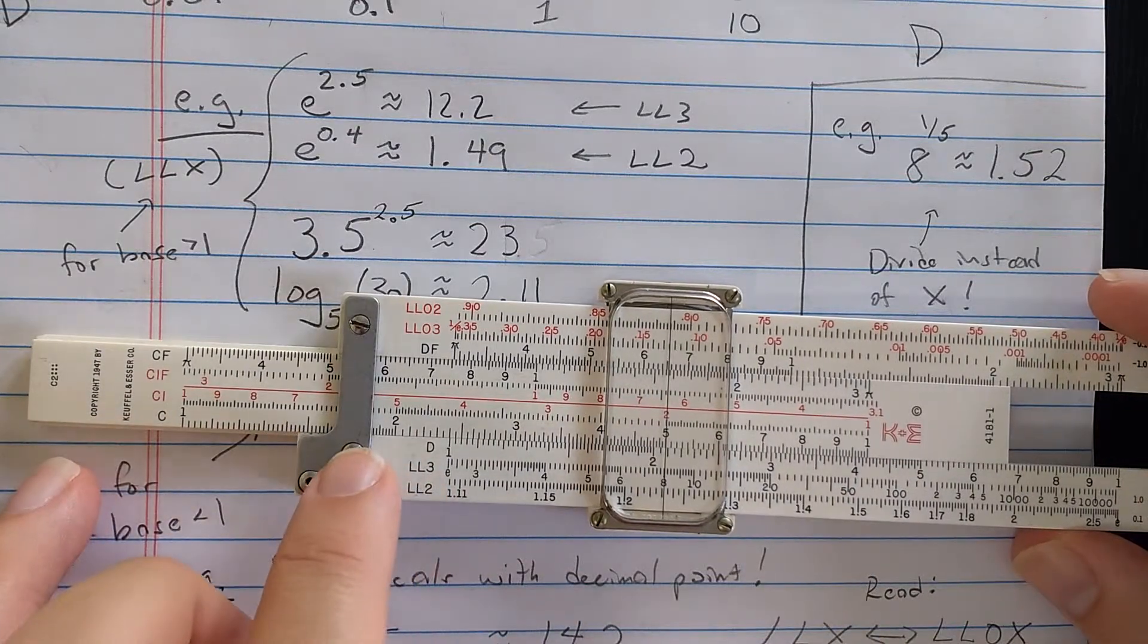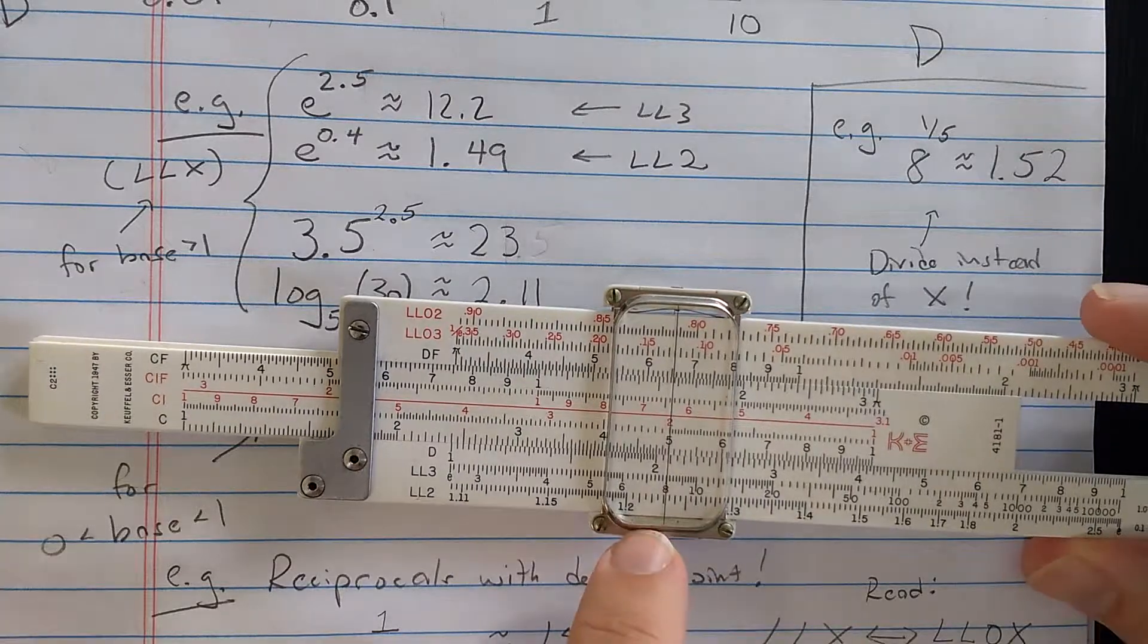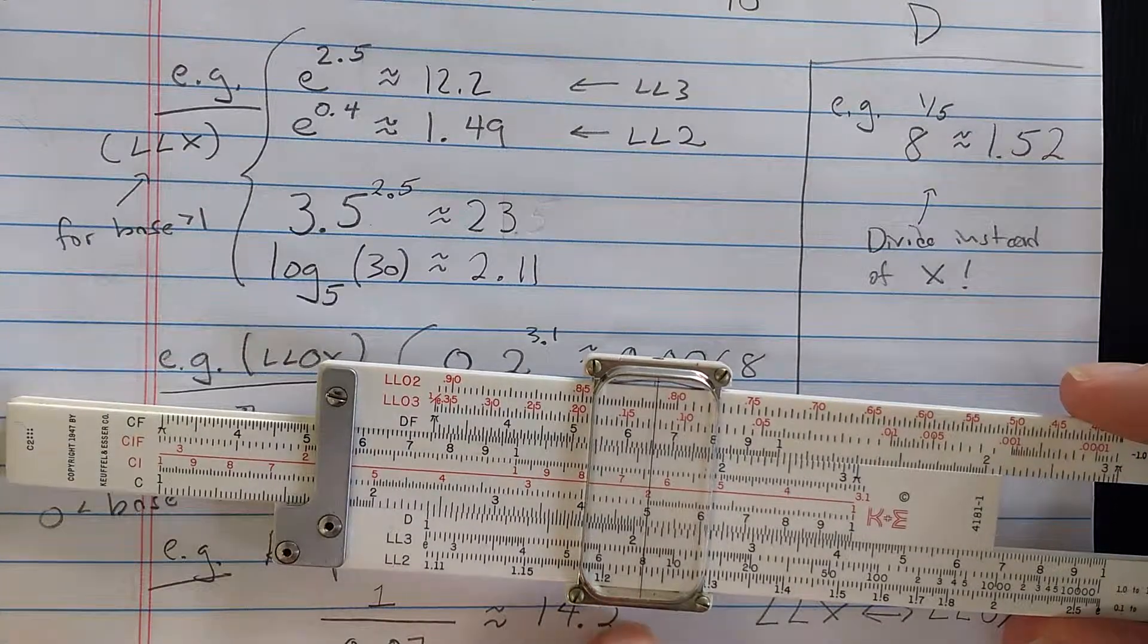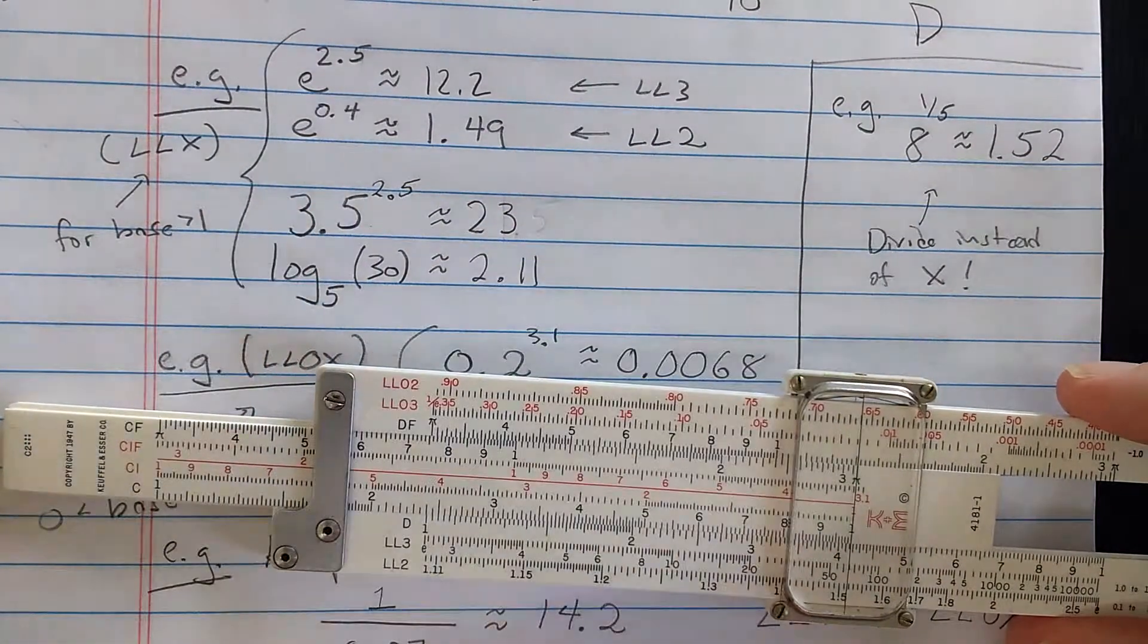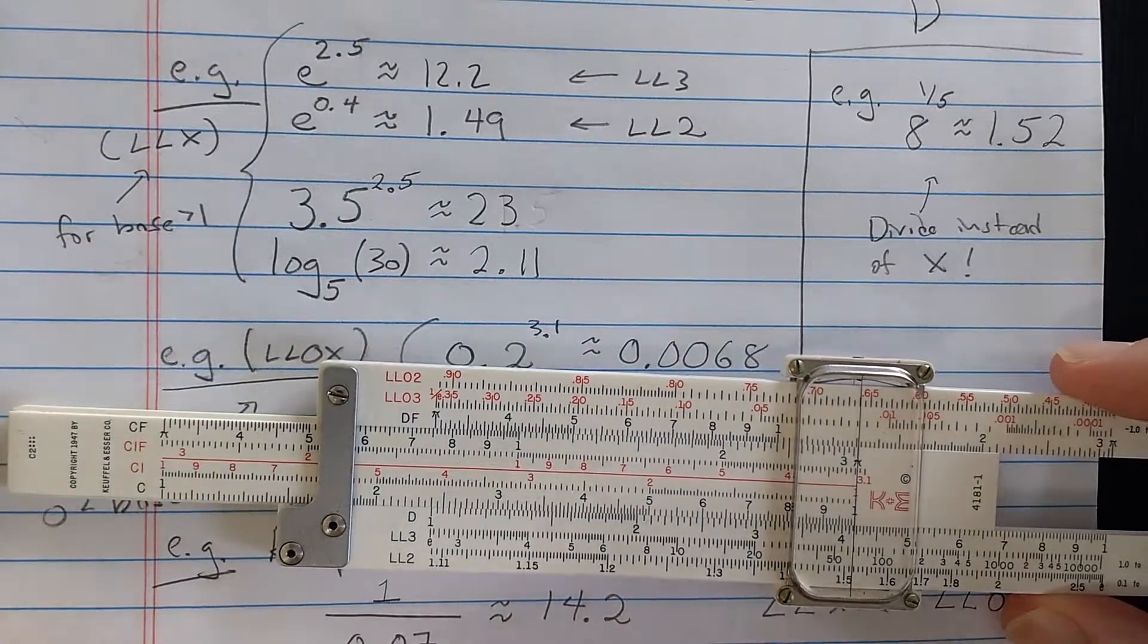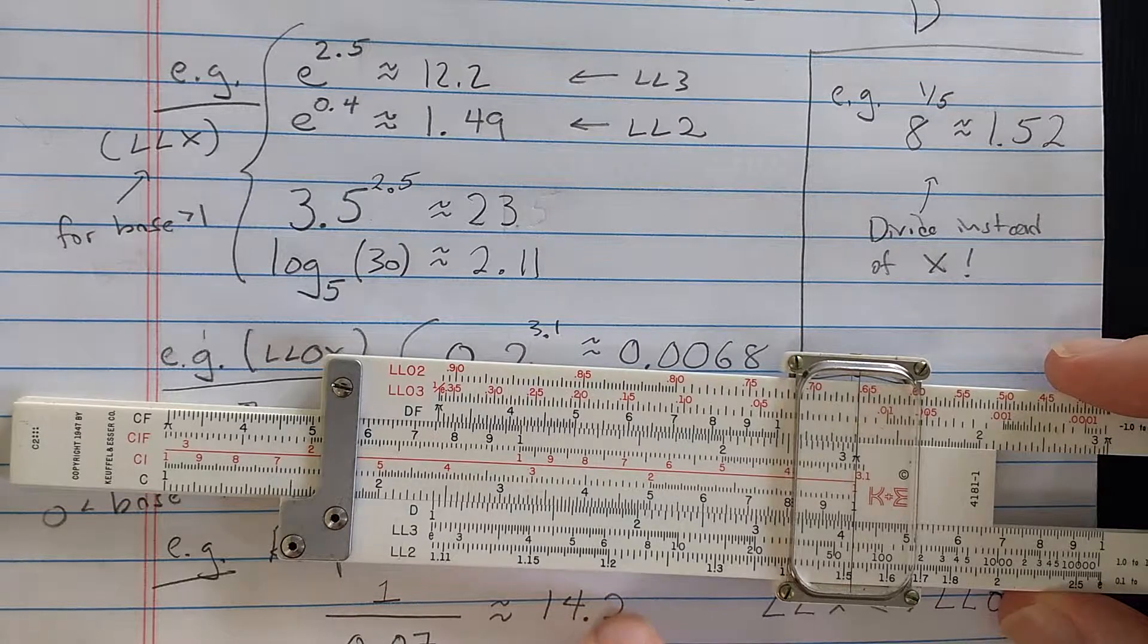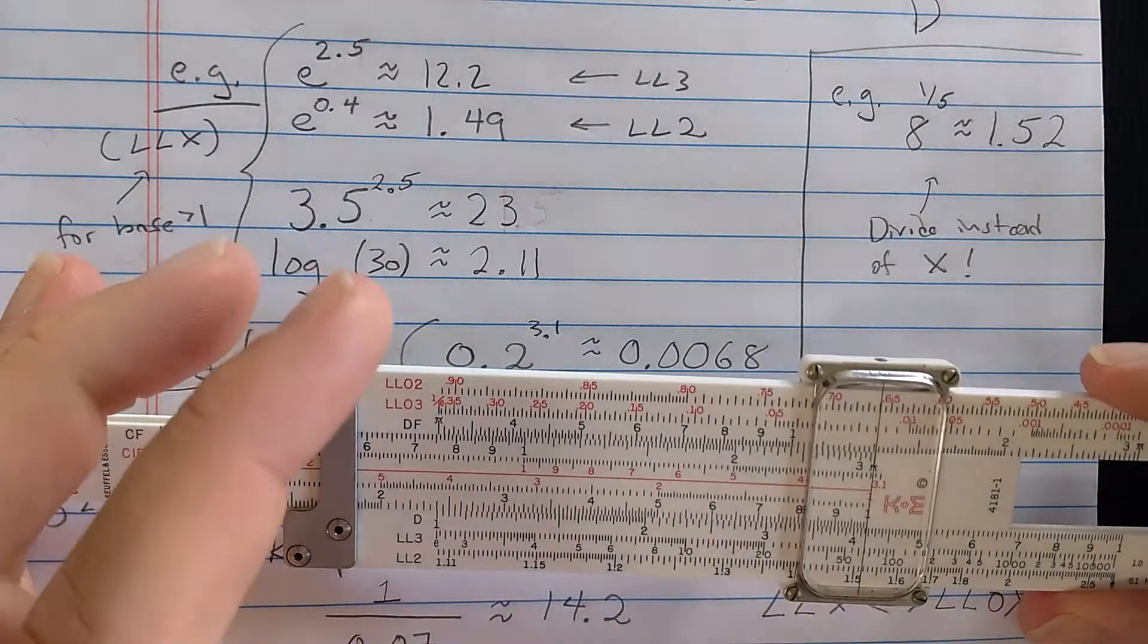attached to the log-log 3 scale on this side is the log-log 2 scale. So I should be reading down at the log-log 2 scale, and you see the result there on log-log 2. The result here on log-log 2 is 1.52. If you were to just jump log-log 3 to log-log 2 or vice versa, that's a power of 10 exponent jump.